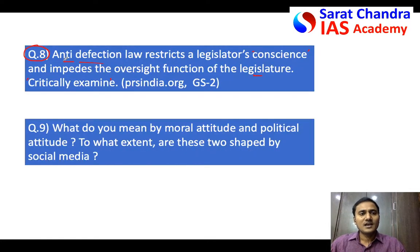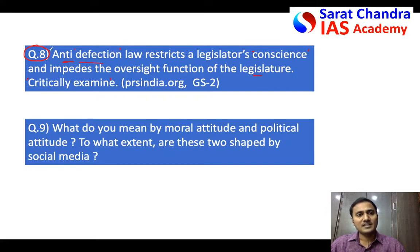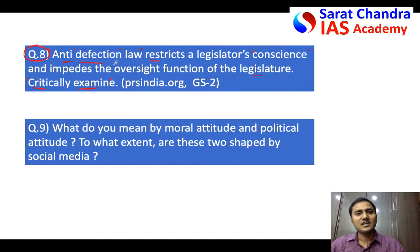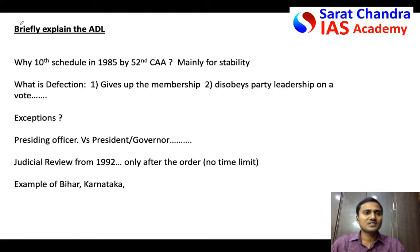For this question on anti-defection law, in the introduction mention what defection is, the gravity of the problem due to defection in India, and then write about the anti-defection law — why it was framed and the reason behind it. Then discuss what is given in the question: that anti-defection law is problematic for certain reasons. Since they ask you to critically examine, write some arguments in favor of the statement and some against, but don't use side headings like 'arguments in favor' — keep the answer flowing organically.